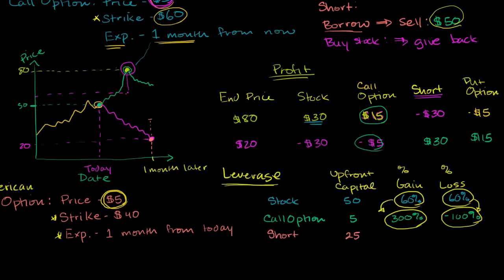Now in our scenario where the stock went down, which was a good thing if you're shorting—you want the stock to go down, that was your bet—in the scenario where the stock went down to $20, you made a profit of $30.